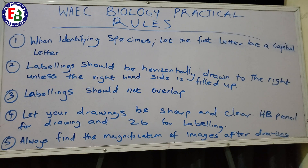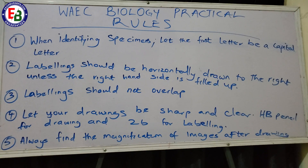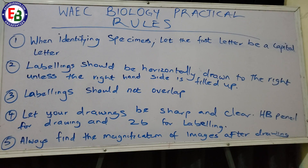For example, if my drawing (image) is 4 cm and the actual specimen (object) is 2 cm, then magnification = 4 ÷ 2 = ×2. If the image in your book is smaller than the specimen, you would get a fraction such as ×½ or ×⅓. Either way, always include the magnification of your image alongside your drawing — this is very important.